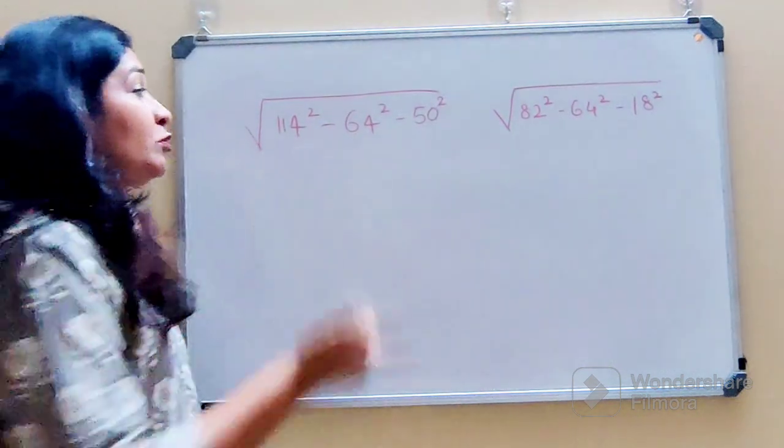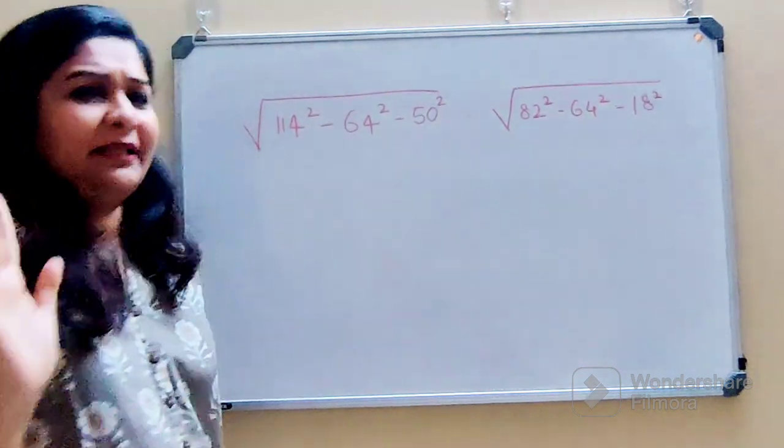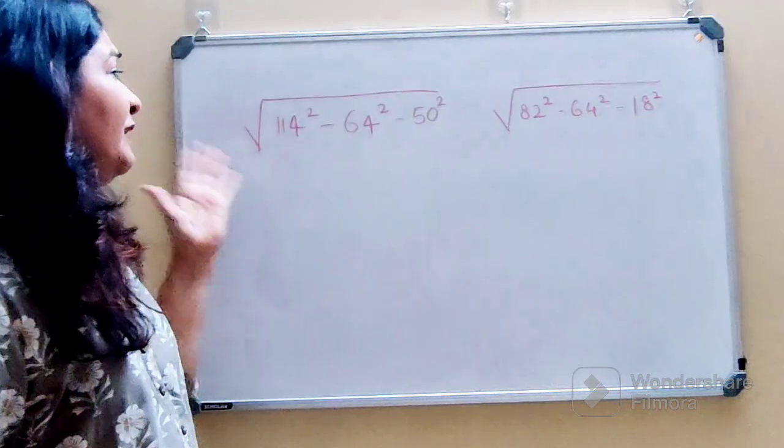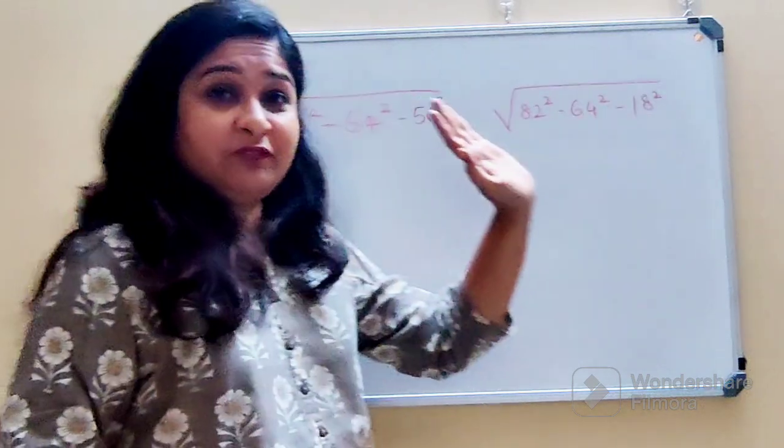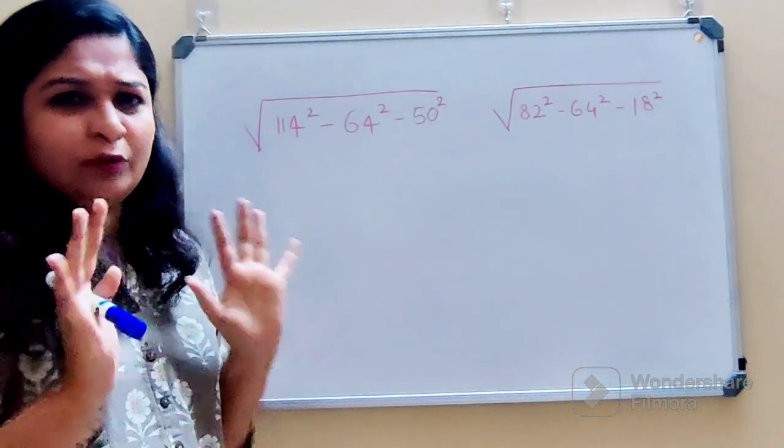Welcome everyone. Today we are going to solve a question which looks quite tricky. We have to find the square root of 114 squared minus 64 squared minus 50 squared. This looks quite complicated.